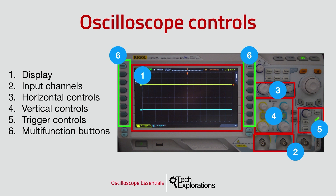Portable oscilloscopes are very small in size and very light. They do have a screen that can show waveforms and settings, but their physical buttons are limited to the absolutely necessary ones. But no matter what kind of oscilloscope you have, it will provide you with these six bare minimum user interface elements.